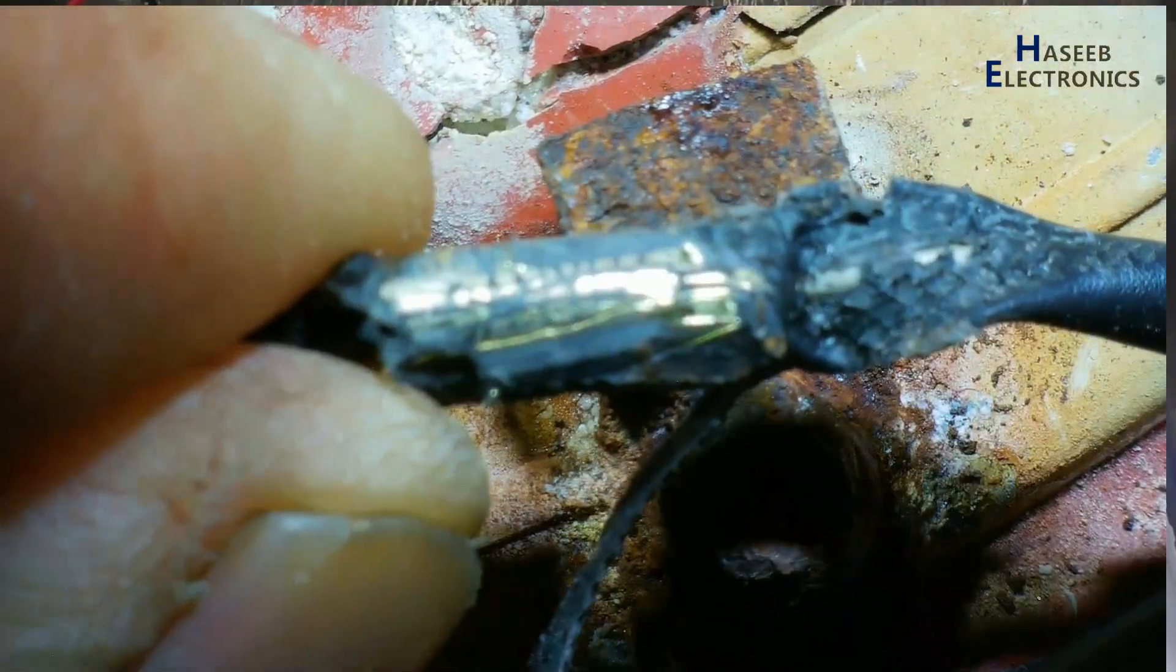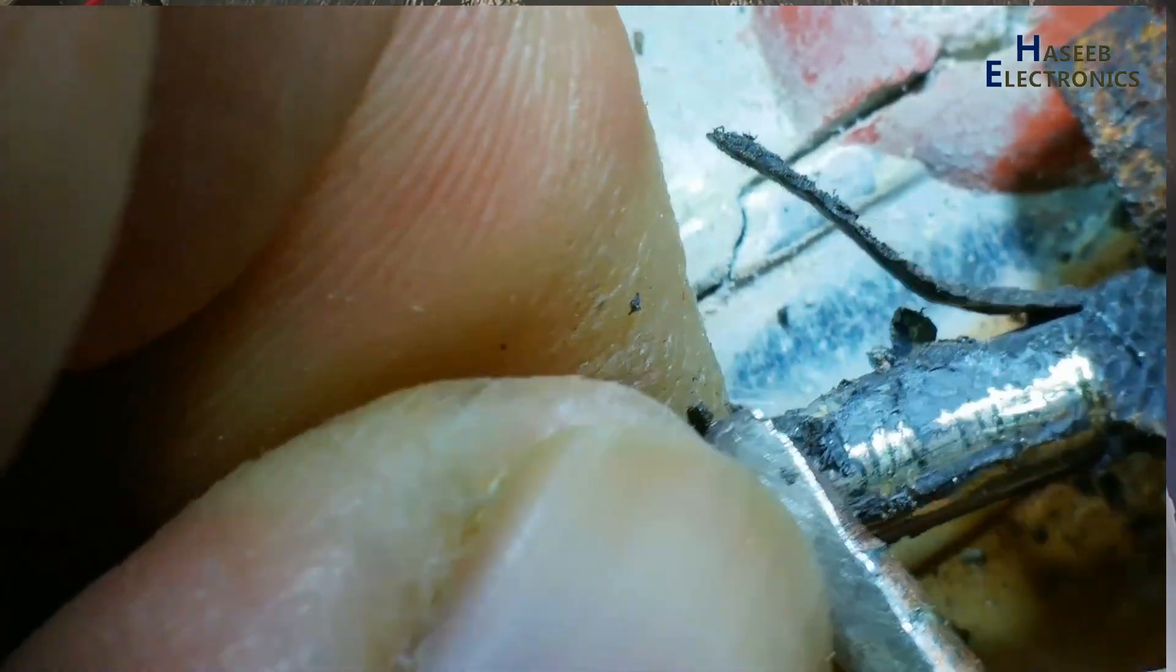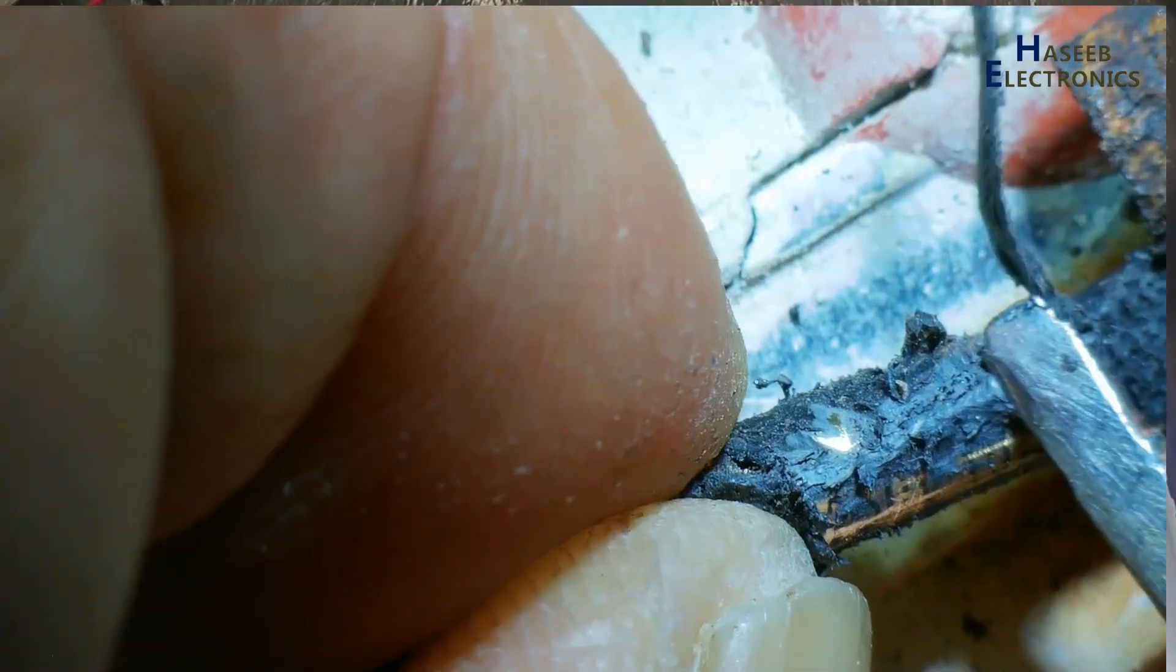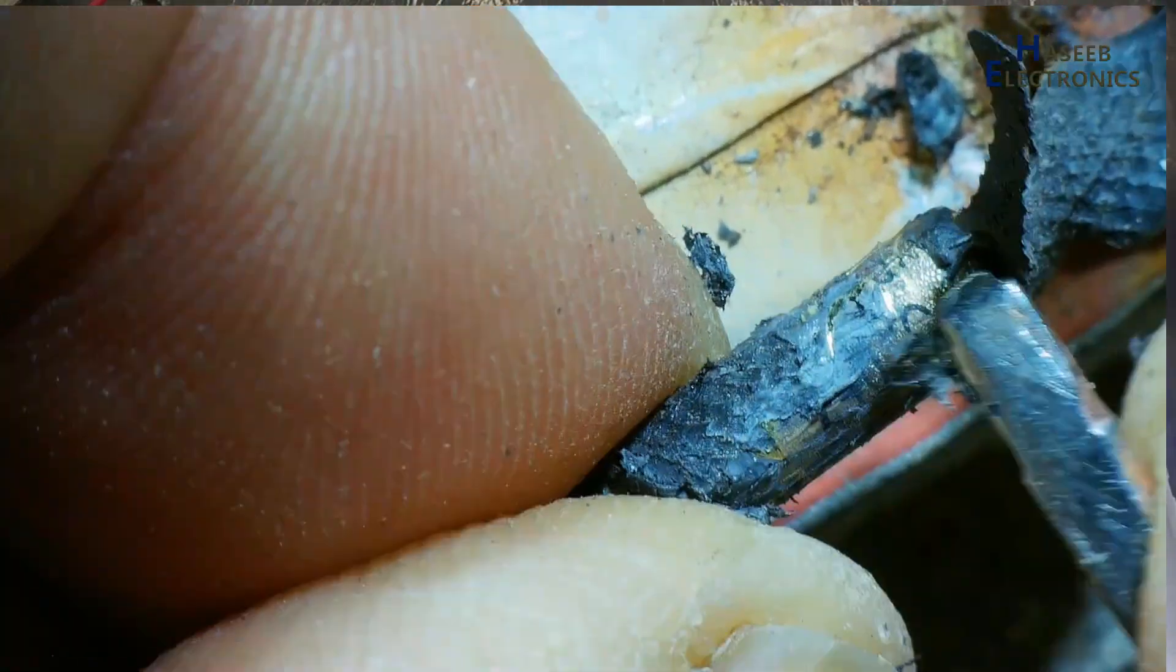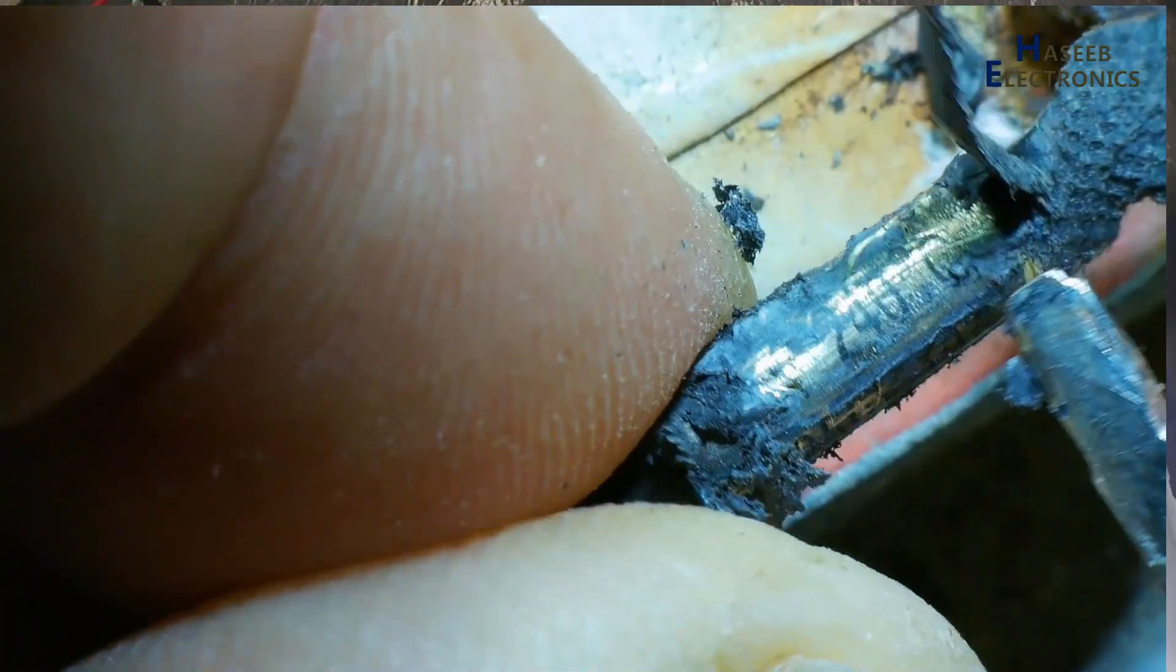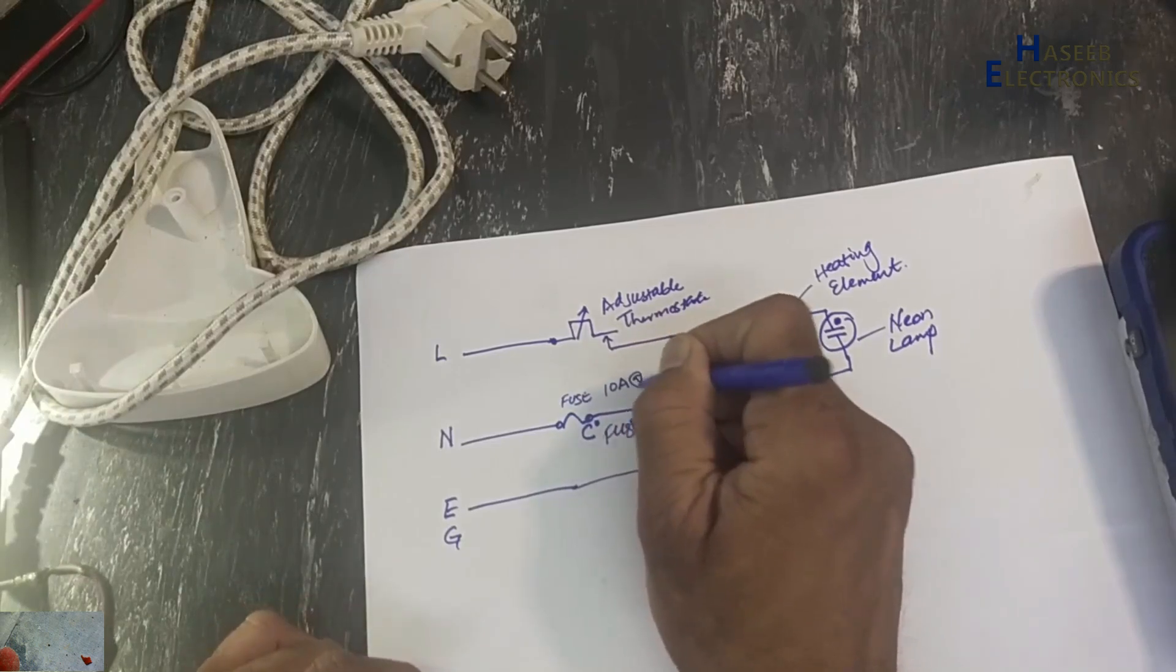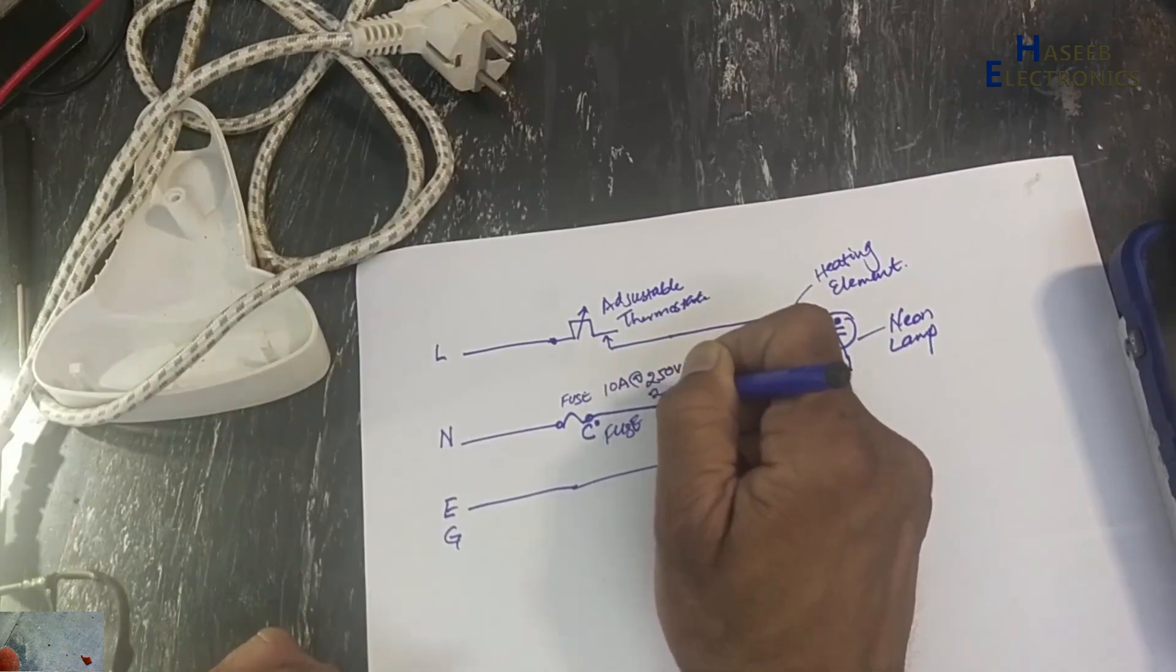And then there is this thermal fuse - it is also damaged. 250 volts, 10 amperes, and this is the temperature rating: 240 degrees Celsius, 10 amperes AC, 250 volts, 240 degrees Celsius.